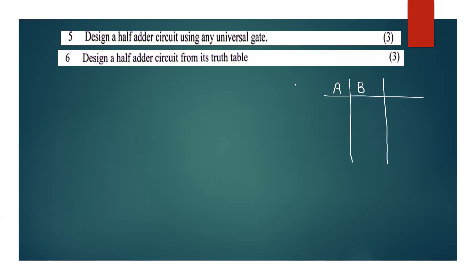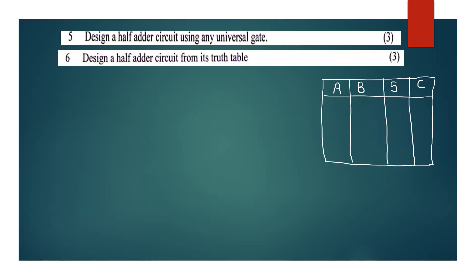Now we are using the truth table. We can define a sum bit and carry bit as the outputs. You can construct the truth table showing all input and output combinations.